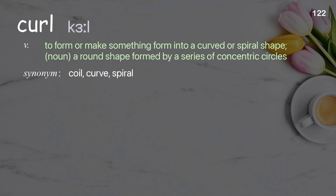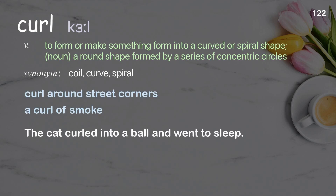Curl: to form or make something form into a curved or spiral shape. Noun: a round shape formed by a series of concentric circles. Examples: curl around street corners, a curl of smoke. The cat curled into a ball and went to sleep.